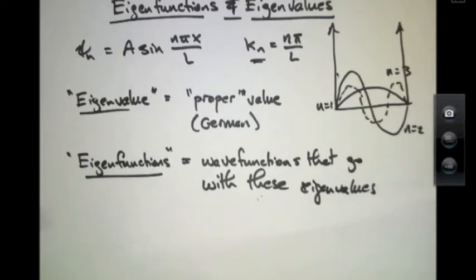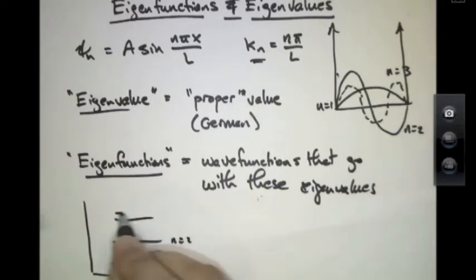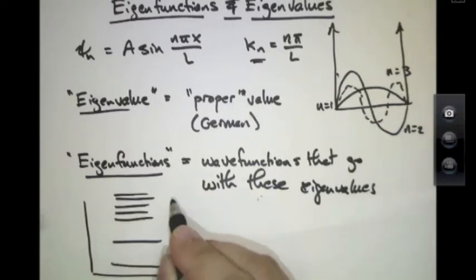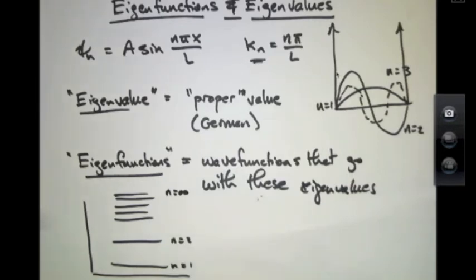This is a lot like, in the Bohr model, there were allowed energy levels, n equals 1, n equals 2, and they got closer and closer, bound up to n equals infinity. These are the allowed energy values in the Bohr model.